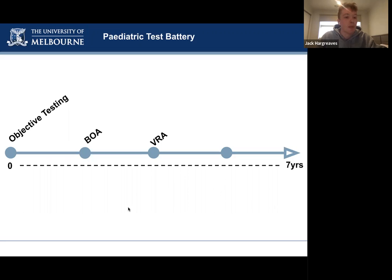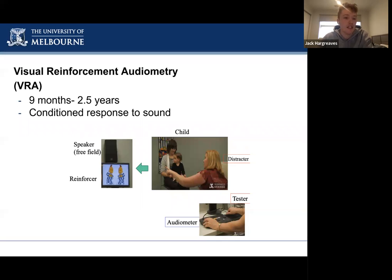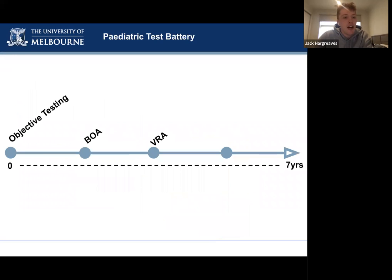The next test on our timeline is visual reinforcement audiometry, or VRA, used from about nine months to two and a half years old. VRA involves conditioning a child to respond to sounds played through speakers. The child sits on their parent's lap, and a puppet or screen with animations is located to the side, acting as a reward for responding to the sound. Through conditioning, the child is taught to turn towards the reward in response to the sound, then responds independently for threshold seeking. VRA is stronger than BOA — we can obtain reliable behavioral responses and test frequency specifically — though we still only obtain free-field information and cannot isolate differences between ears.